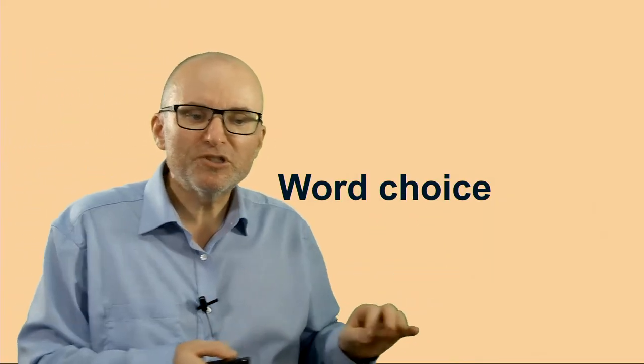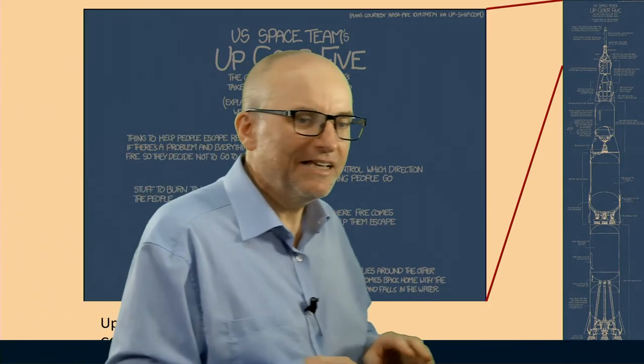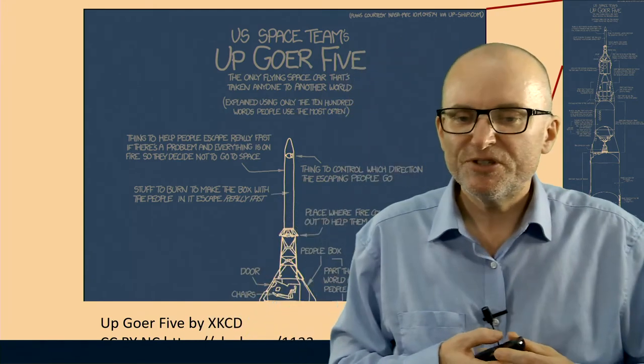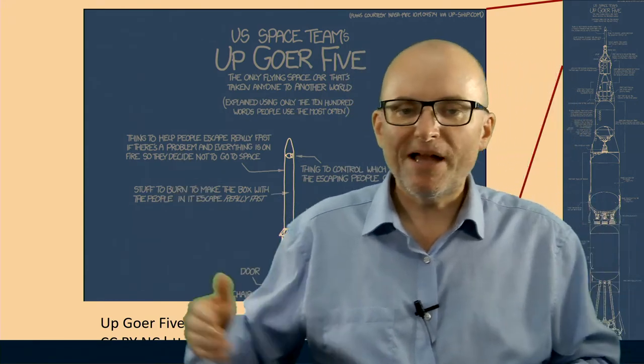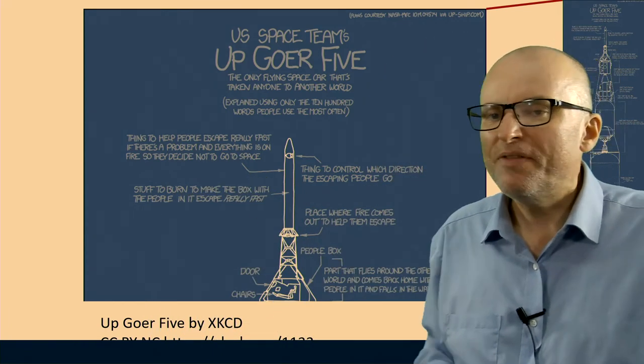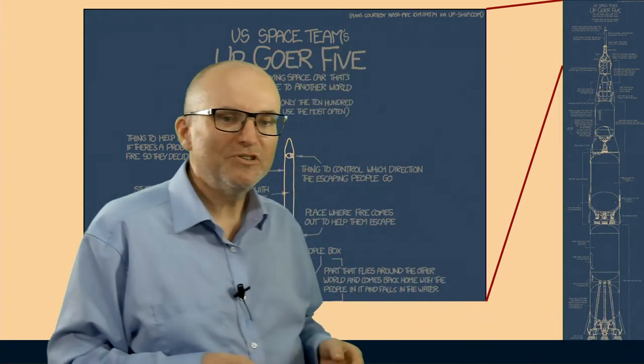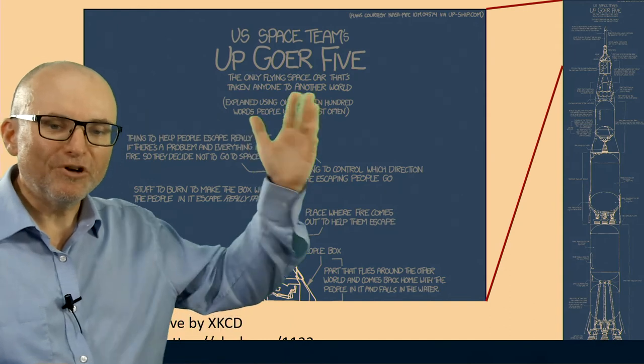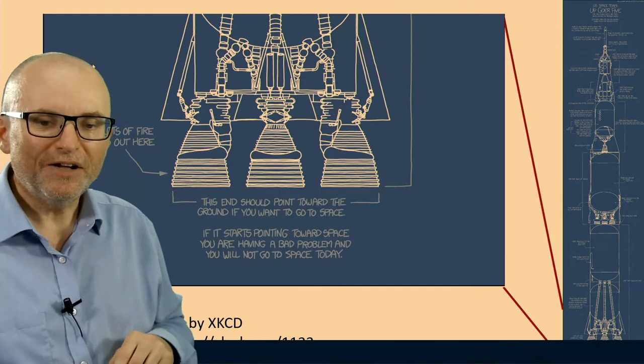So the other thing when you're looking for simple language is word choice, choosing words. And very often people can oversimplify. There's a famous cartoon by XKCD that tried to describe the space shuttle by using only the 1,000 most frequent words in the English language. Using frequent words is a good idea, but if you're limited to the 1,000 most frequent ones, you're going to end up with things that are hard to say and hard to understand. For example, you have things like 'lots of fires come out here.'